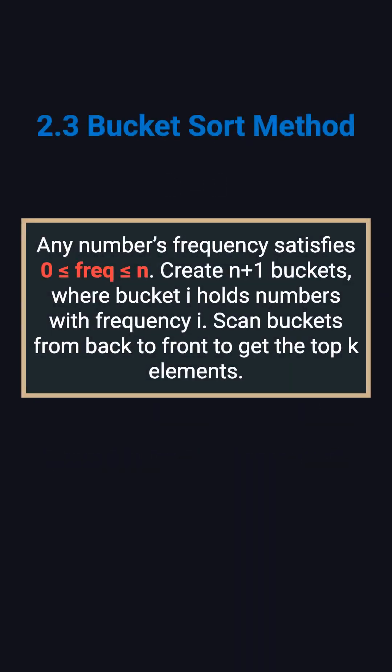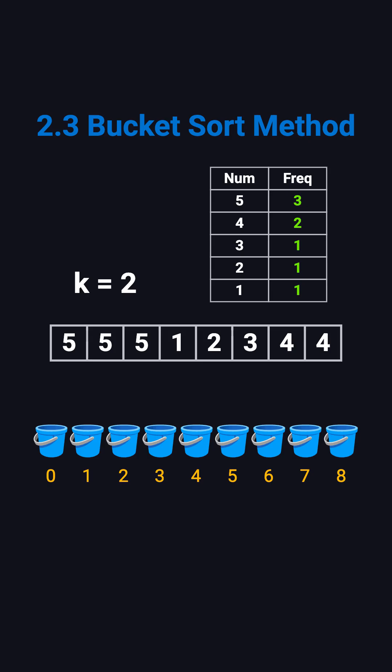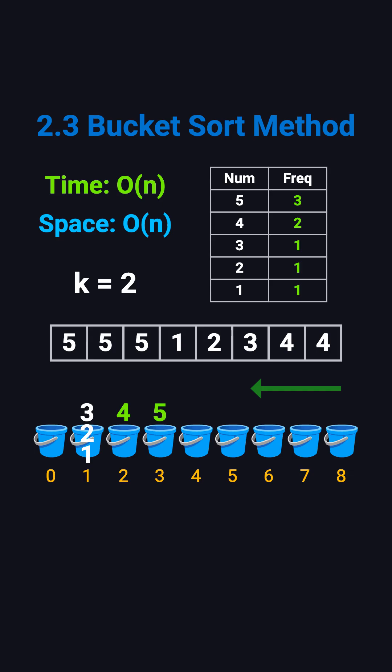There's an even faster approach: bucket sort, which runs in linear time. Here's the key idea — a number can't appear more times than the total length of the array. So we create a list of buckets with length n plus 1. Each index represents a frequency, and each bucket stores the numbers that appear that many times. For example, we put number 5 in bucket 3, number 4 in bucket 2, and the remaining 3 numbers in bucket 1. Then we iterate from the end, from the highest frequency bucket down, and collect numbers until we have k of them. In this case, we get 5, 4. This method doesn't require sorting or a heap. The time complexity is O(n), and the space complexity is also O(n).